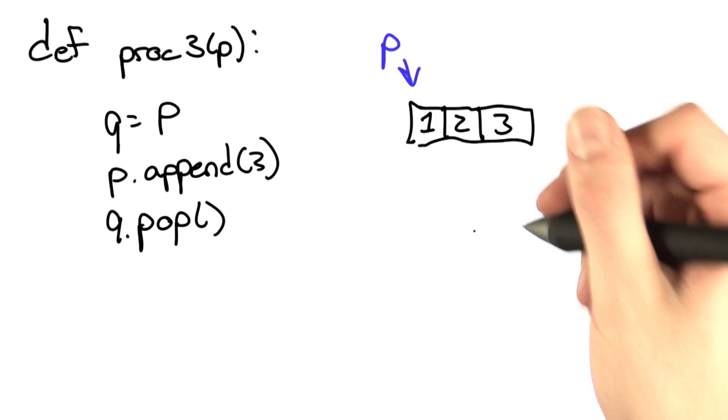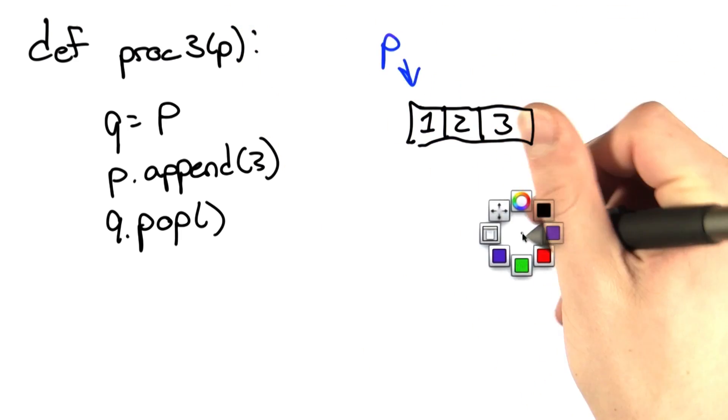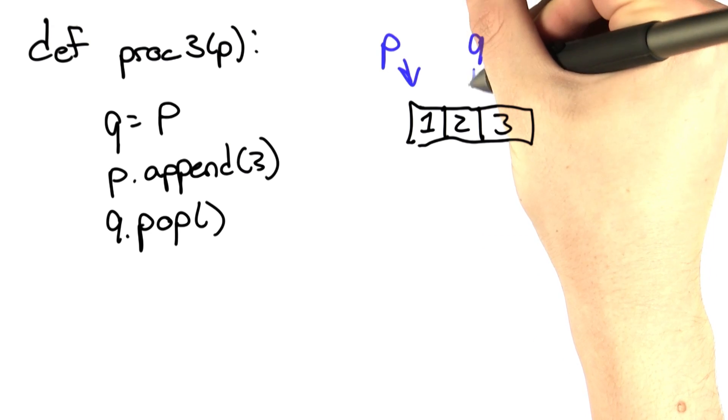We can go through this problem like we did the previous one. We start with a variable p that points to a list. We then create a new variable, q, which points to the same thing as p.